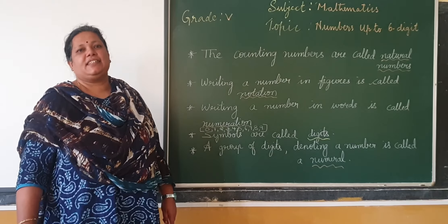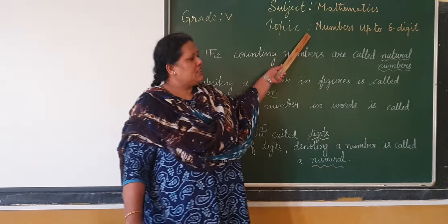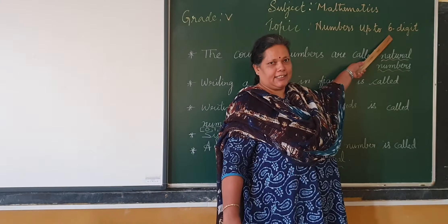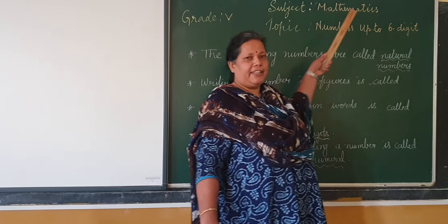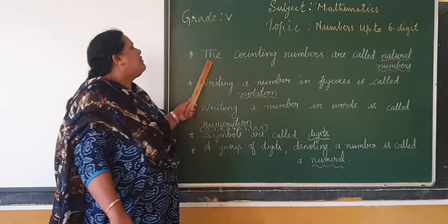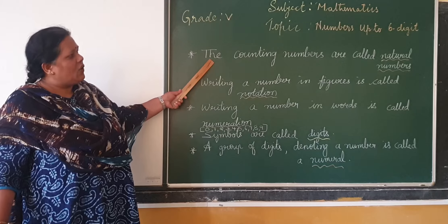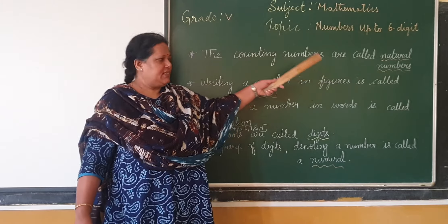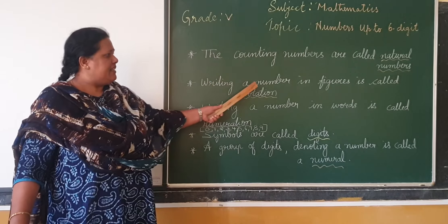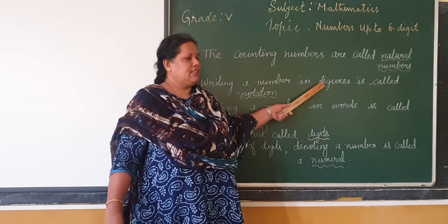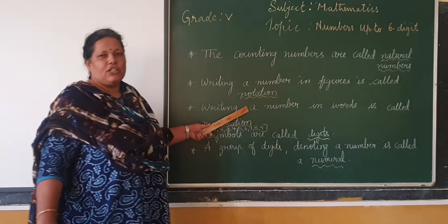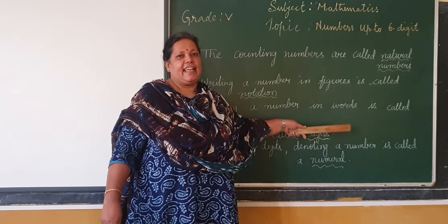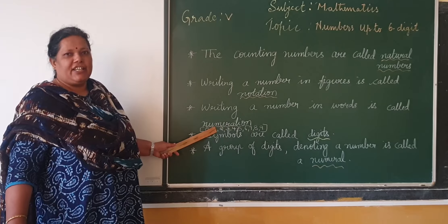Let us study now the numbers. You know, numbers are significant. We call it some points on our table. First part, the counting numbers are called natural numbers. Writing a number in figures is called numeration. Writing a number in words is called numeration.